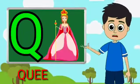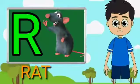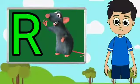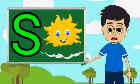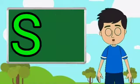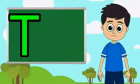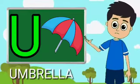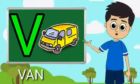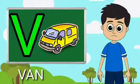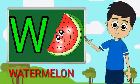Q for queen, R for rat, S for sun, T for tomato, U for umbrella, V for van, W for watermelon.